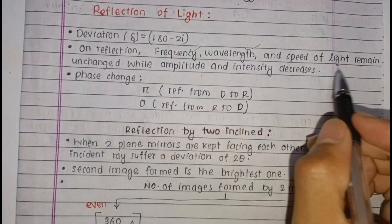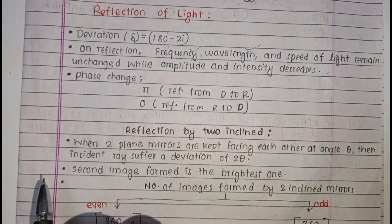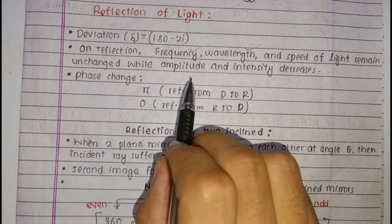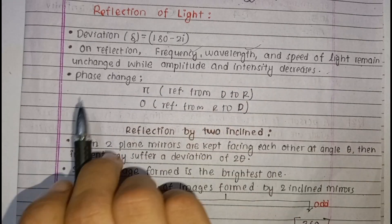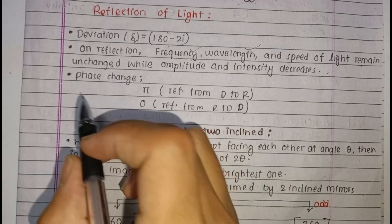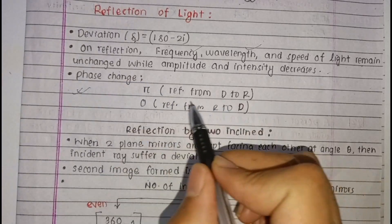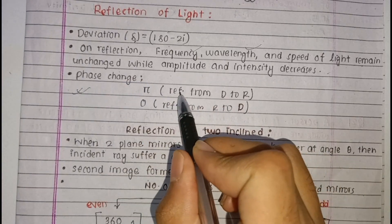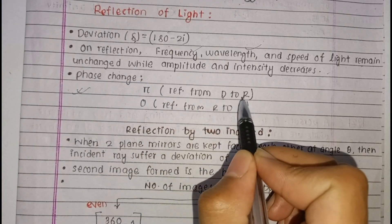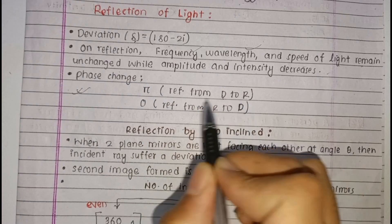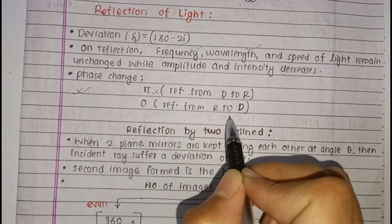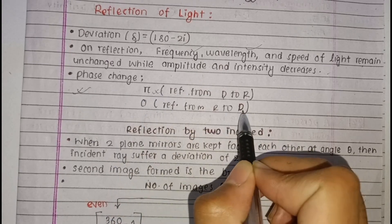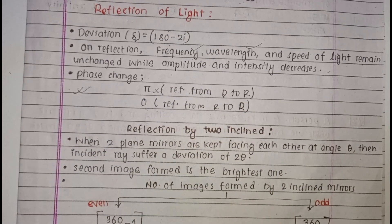Wavelength and speed of light change. Amplitude and intensity decrease. Phase angle is more general. When light goes from denser to rarer medium on reflection, the phase difference is π. From rarer to denser, the phase difference is 0.